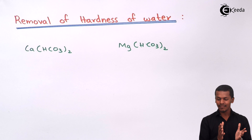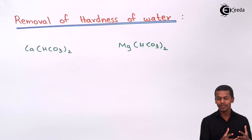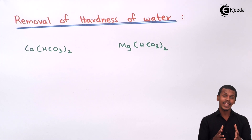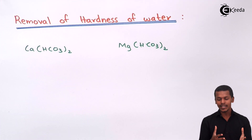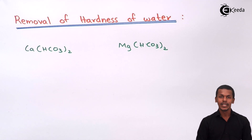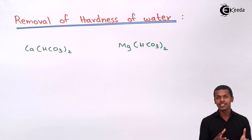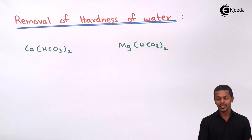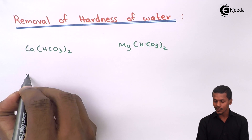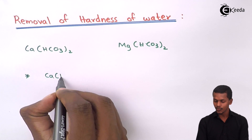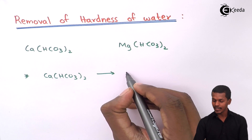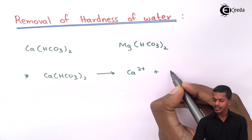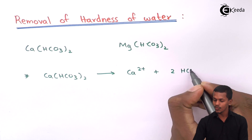In the water, if we have more calcium ions along with more magnesium ions, we can remove them by applying the common ion effect. We can remove the calcium ions or magnesium ions by addition of a substance that consists of the common ion. Talking about calcium bicarbonate — it will dissociate into Ca²⁺ along with two moles of HCO₃⁻.